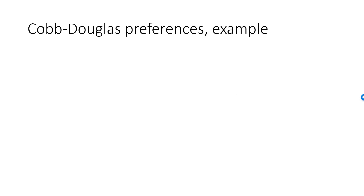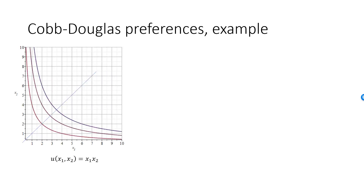Let's have a look at indifference curves for Cobb-Douglas preferences for different values of the exponents. First, we have a Cobb-Douglas utility function where the exponents are equal, in this case one. I have added a blue line which traces out the bundles where we consume the same amount of both goods. The utility function is symmetric around this straight line, and MRS is equal to minus one at all points on the blue line. The consumer is willing to trade these goods in a one-to-one ratio if she is consuming an equal amount of them. Of course, the indifference curve will look the same if the utility function is the square root of x1 times x2, or log x1 plus log x2, or any other monotonic transformation of u.